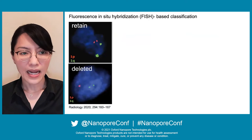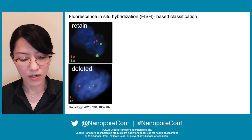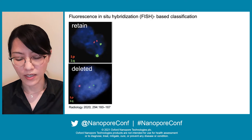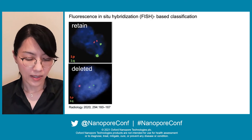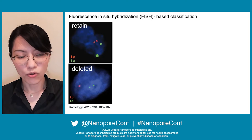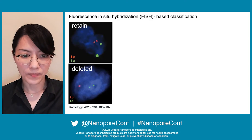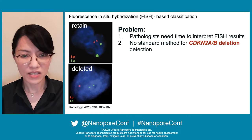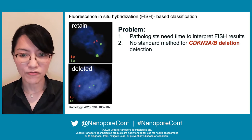Many labs around the world use fluorescent in situ hybridization (FISH) for tumor classification. The top figure shows retained or no deletion, and the bottom figure shows the deletion. Pathologists need time to interpret this figure, and until now there is no standard method for CDKN2AB deletion detection.